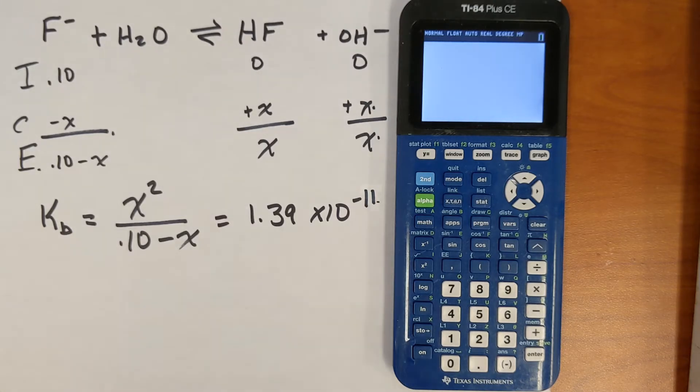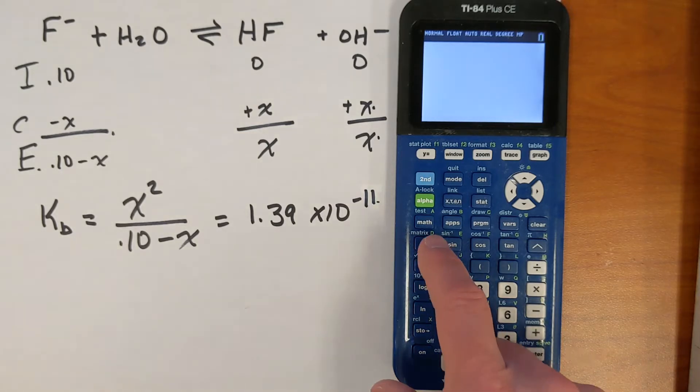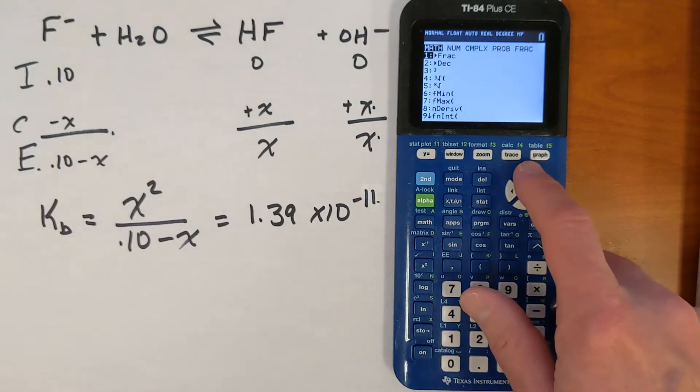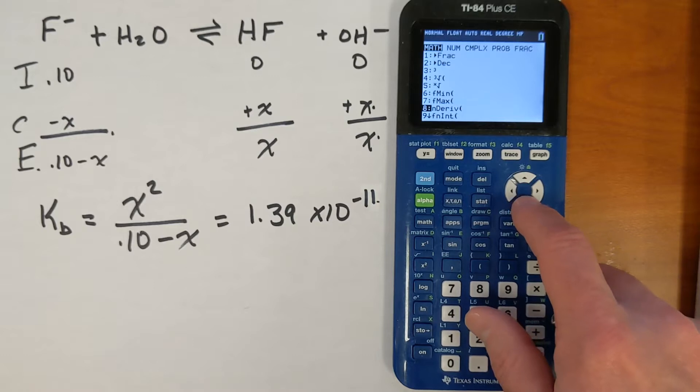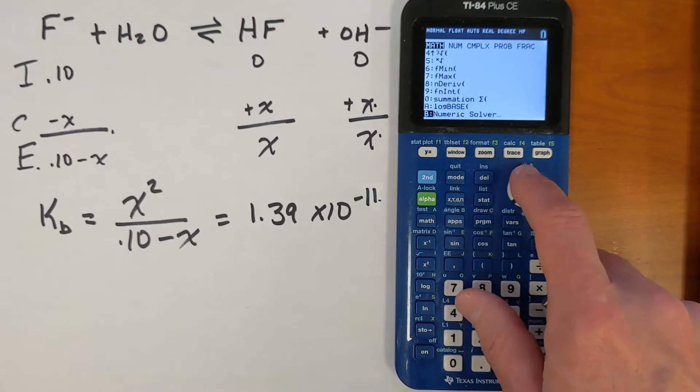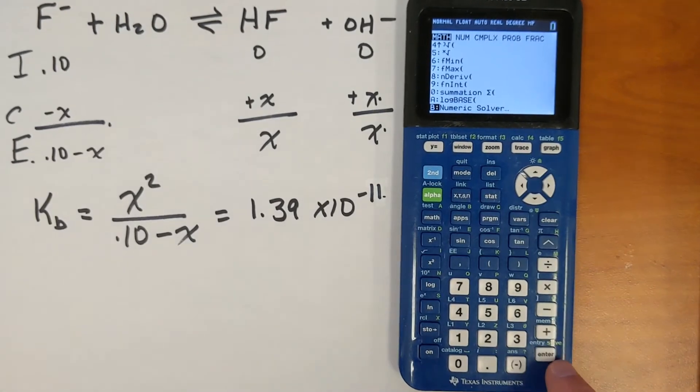Other calculators you can do this on also. So let's go. The first thing we have to do is put this thing into math mode. So now I'm going to scroll down and look at something called numeric solver. There it is. I could also use the shortcut to do that. I'm going to press enter.